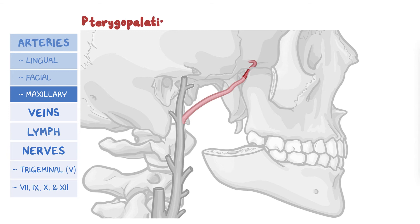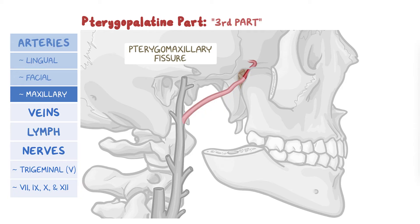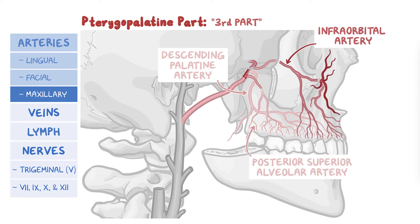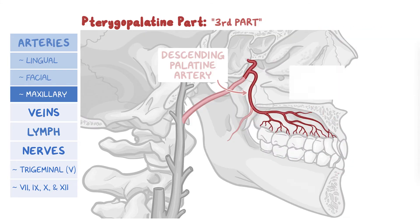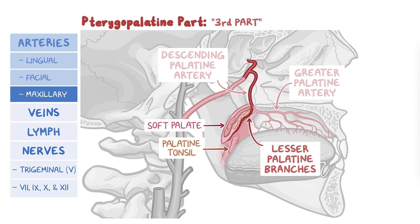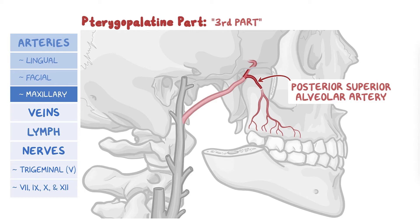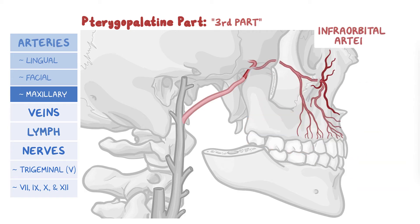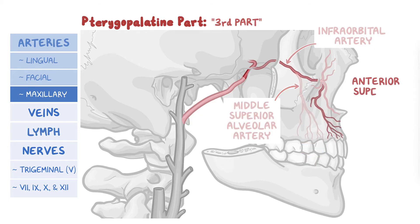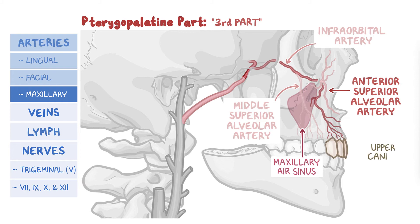Finally, the pterygopalatine part, or third part, passes from the infratemporal fossa into the pterygopalatine fossa via the pterygomaxillary fissure. It gives off the descending palatine, posterior superior alveolar artery, and the infraorbital artery. The descending palatine splits into two branches: the greater palatine artery that supplies the hard palate, and the lesser palatine branches that supply the soft palate and palatine tonsil. The posterior superior alveolar artery divides into two or three branches, which bore through the body of the maxilla and supply premolar and molar teeth, the maxillary sinus, and associated gingiva. The infraorbital artery gives two branches: the middle superior alveolar artery to the upper premolar teeth, and the anterior superior alveolar artery to the maxillary air sinus and the upper canine and incisor teeth.